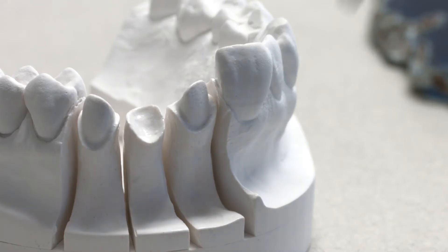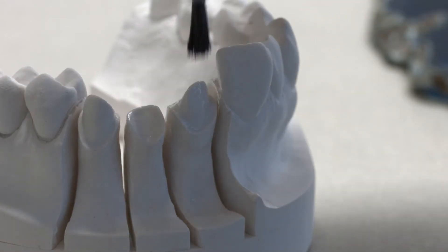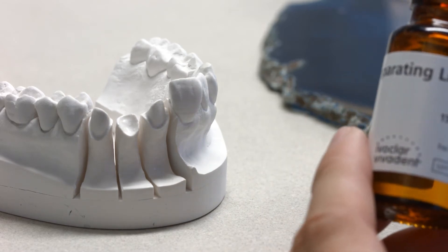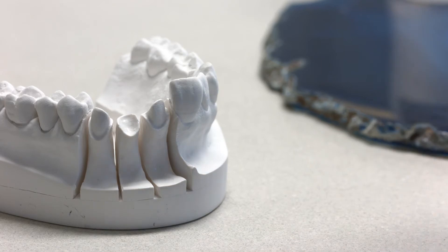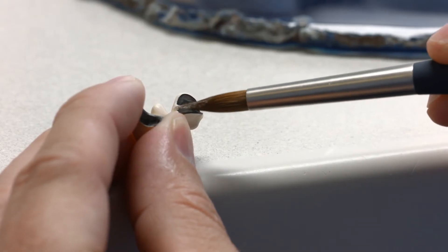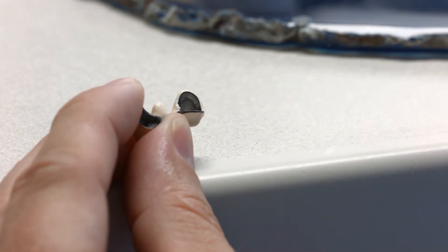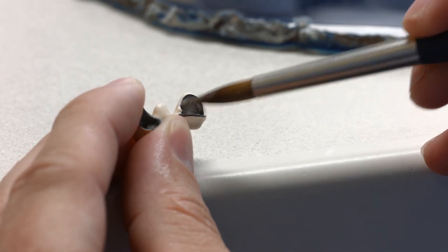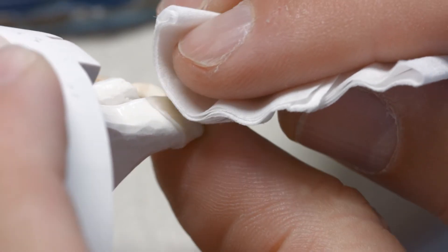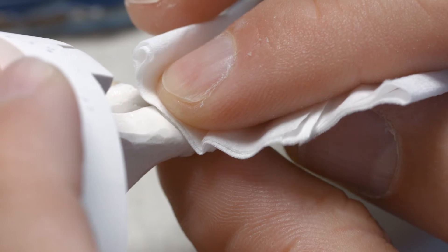Seal the margin areas of the model dies again with IPS margin sealer. Allow IPS margin sealer to dry and then apply IPS ceramic separating liquid to the margin areas. Apply some margin material in the gap which was created between the ceramic shoulder and the stone die during the first margin firing. Then, complete the margin and dry it.